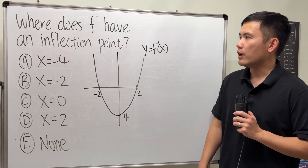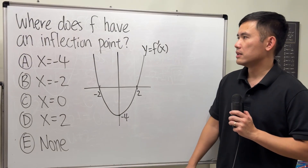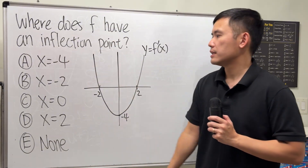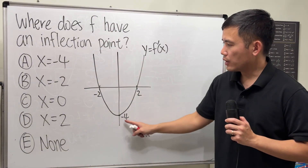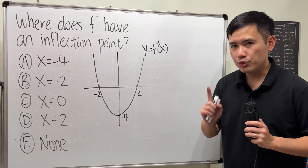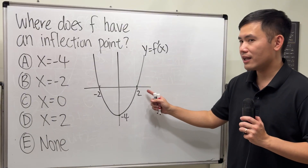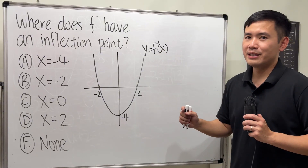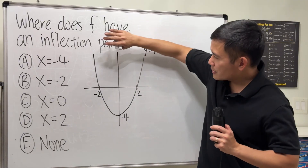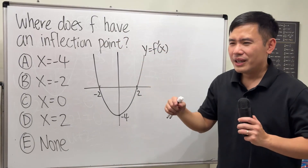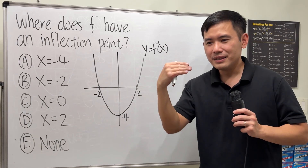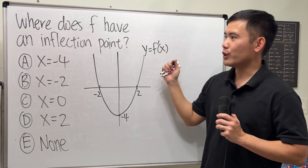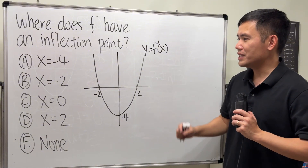For this question, we are going to find out at what x does our original f have an inflection point. Now, you have to be super careful because the graph shown is the derivative graph — this is f'(x). So if you look at just the picture thinking about concave up or concave down, it's not that, because we are not given the original graph. This is the derivative graph.